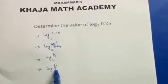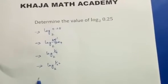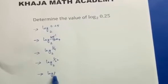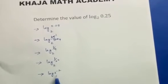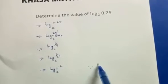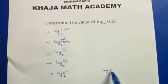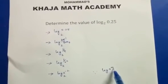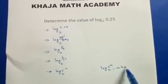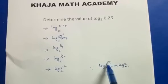Log 1 by 4 can be written as log 1 by 2 squared to the base 2. Now 1 by 2 squared is 2 power minus 2, so we have log 2 power minus 2 to the base 2. This is in the form of the logarithm power rule: log a to the power m to the base x equals m times log a to the base x.